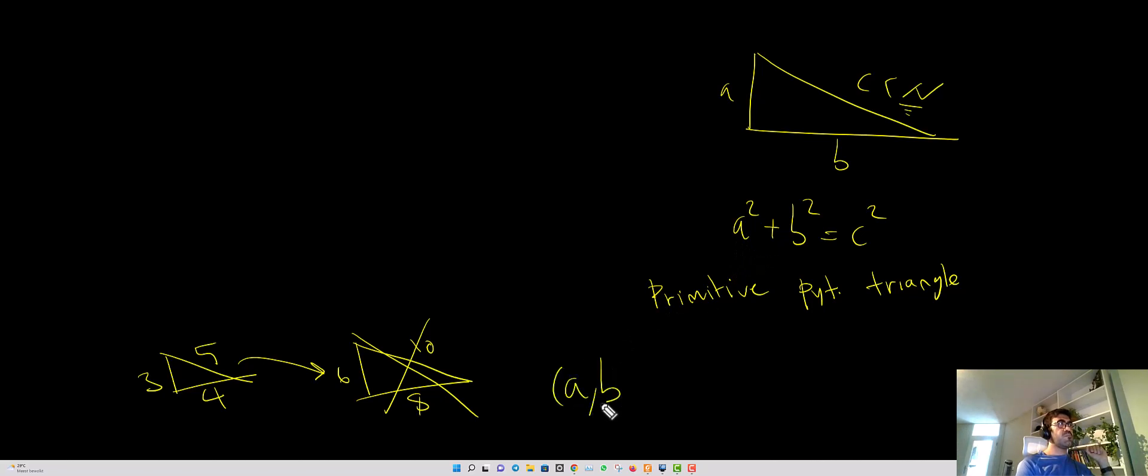And there is a theorem by Lechmer in 1900 saying that this number is asymptotically equal to n over 2, wait for it, pi.